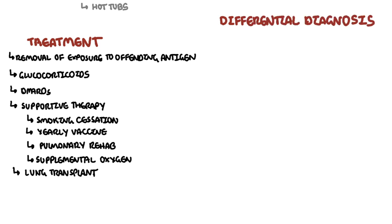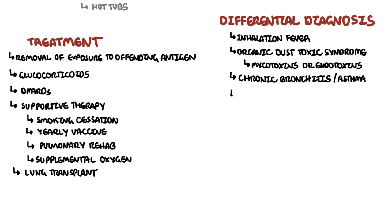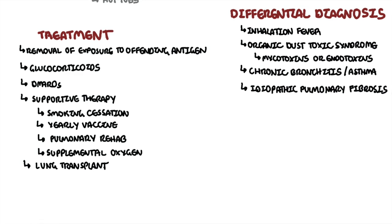Differential diagnoses to consider in someone presenting with hypersensitivity pneumonitis include other upper lobe predominant interstitial lung diseases, inhalation fevers, organic toxic dust syndrome from mycotoxins or endotoxins, chronic bronchitis, asthma, and idiopathic pulmonary fibrosis — which has more of a lower lobe predominance.